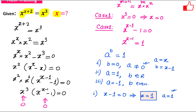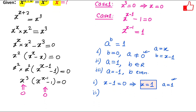Now let us consider the second case: a equals 1 and b belongs to the real numbers. a equals 1 means x equals 1. And what is b? b is basically x minus 1. So if x is 1, b equals 1 minus 1, that is 0, which is a real number. So this case is also possible, but we get the same solution x equals 1.